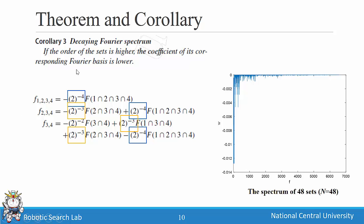Corollary 3 shows that based on these equations, if the frequency is higher, its coefficient is lower due to decay terms. We can also show this in a spectrum picture. When n equals 48, the spectrum shows that when the frequency is higher, the corresponding coefficient is lower.